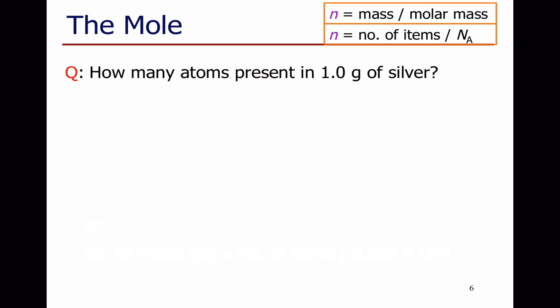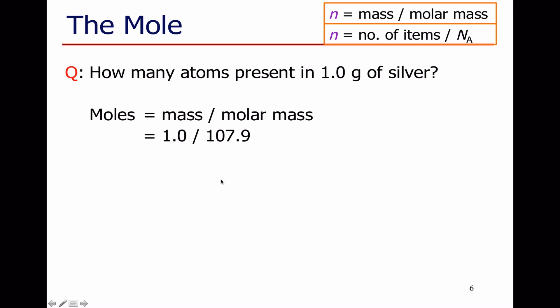Let's do a couple of examples. How many atoms are there in a gram of silver? First, we want to know how many moles there are. Moles is the mass divided by the molar mass. I've got one gram. Silver is just an atom, so I look up its relative mass on the periodic table: 107.9, and I work out that I've got 0.0093 moles. Notice, this is the symbol for the unit mole — MOL — with a space between the measurement and that unit.